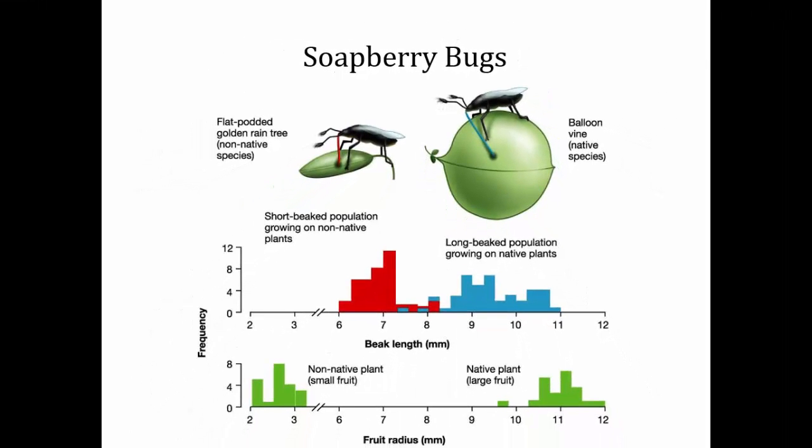This demonstrates disruptive selection, the first requirement for sympatric speciation. In about 60 or 70 years since the golden rain tree was introduced, these insects started specializing and diverging in their traits. However, these are not a distinct species yet, because the second thing needed for sympatric speciation — positive assortative mating — is absent. Long-beaked bugs and short-beaked bugs will mate with whatever other soapberry bugs they encounter. But if they did evolve some choosiness, they could lead to distinctive species formed on their host plants.